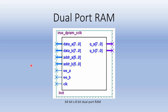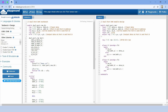Now I will discuss dual port RAM. It is a 64-bit by 8-bit dual port RAM. The main difference from single port RAM is that there are two ports. We have two input data ports, two input address ports, two input write enable ports, and two output data ports. The rest is the same as single port RAM. The module design code is similar — these are all the input ports and these are the output ports. We use the same RAM register for storing data at 64 locations.